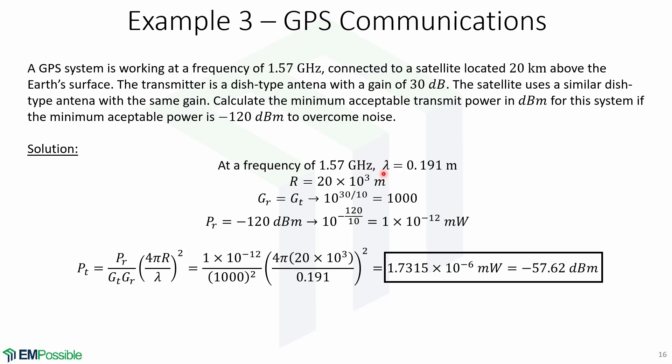For the solution, the wavelength at a frequency of 1.57 GHz equals 0.191 meters. The distance in meters is 20 × 10³. The antennas are the same. So GR equals GT, which is equal to 30 dB. Converted to linear scale, 30 dB is equal to 1000.